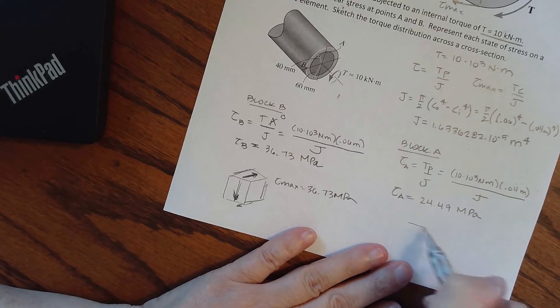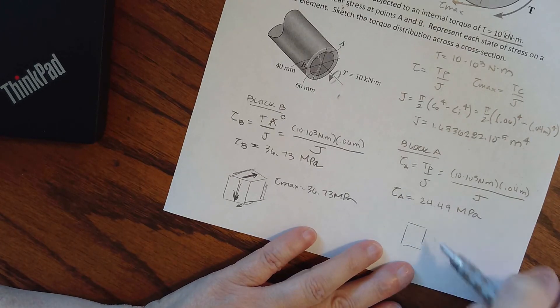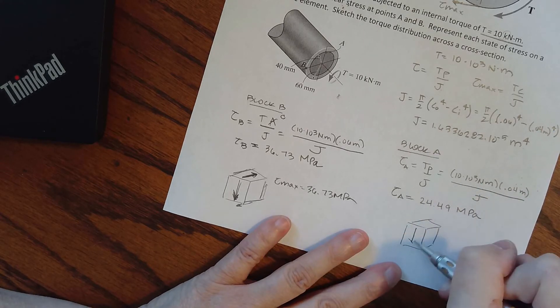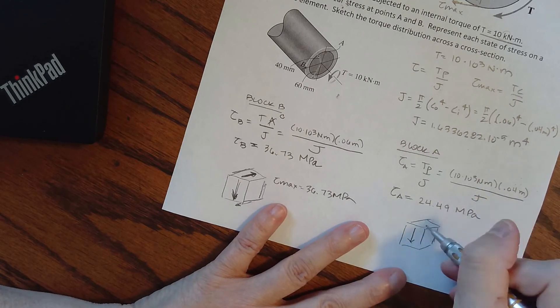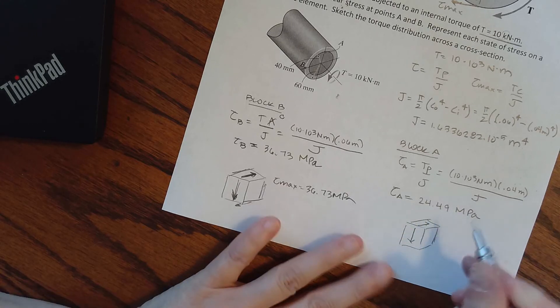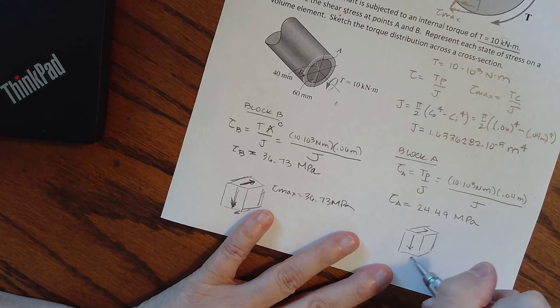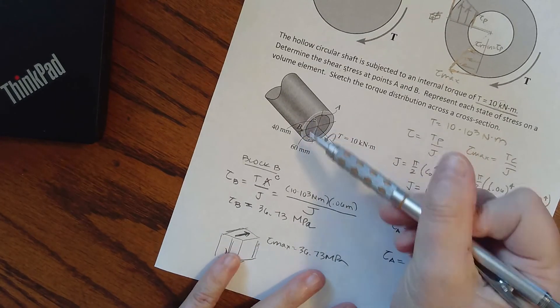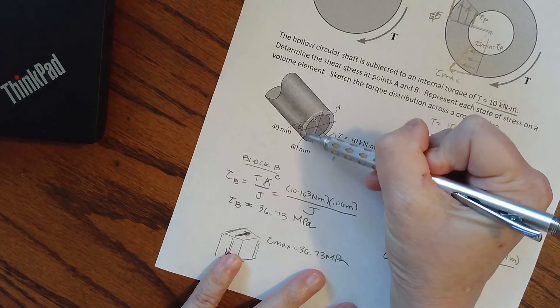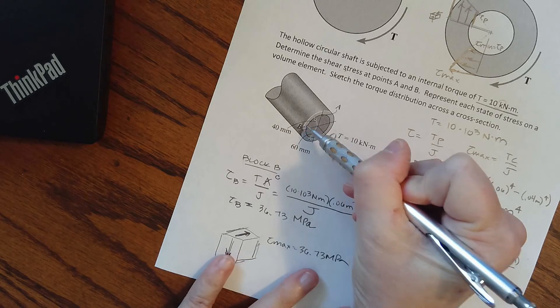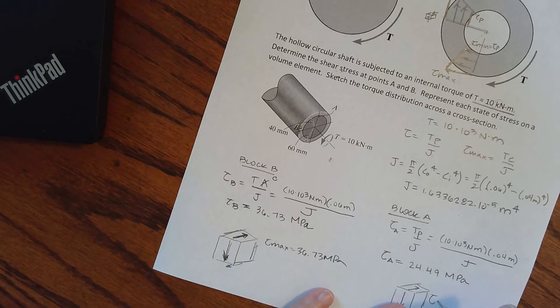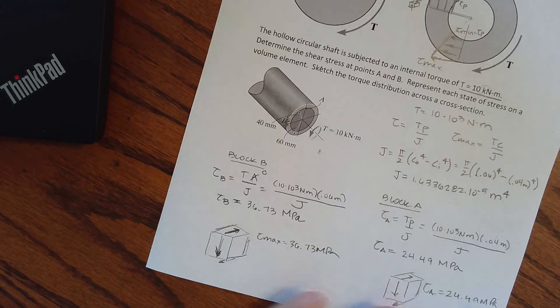And then I can do the same thing here. Here I have this block and it is still spinning. We're going down, so it's going to be up in the back and across in the top, and then on the bottom it would be coming back towards us. That's how that stress, it's on the outside but then it's going in. This is going to be 24.49 mega pascals.